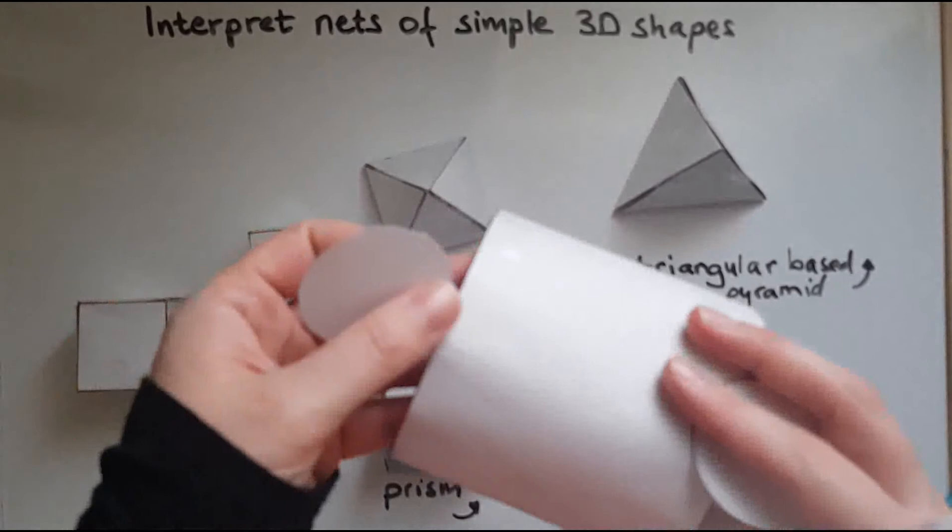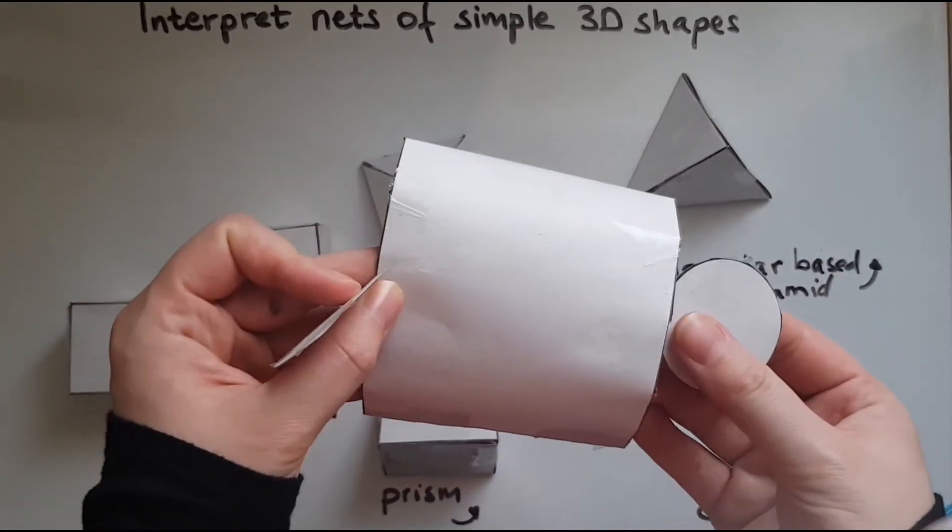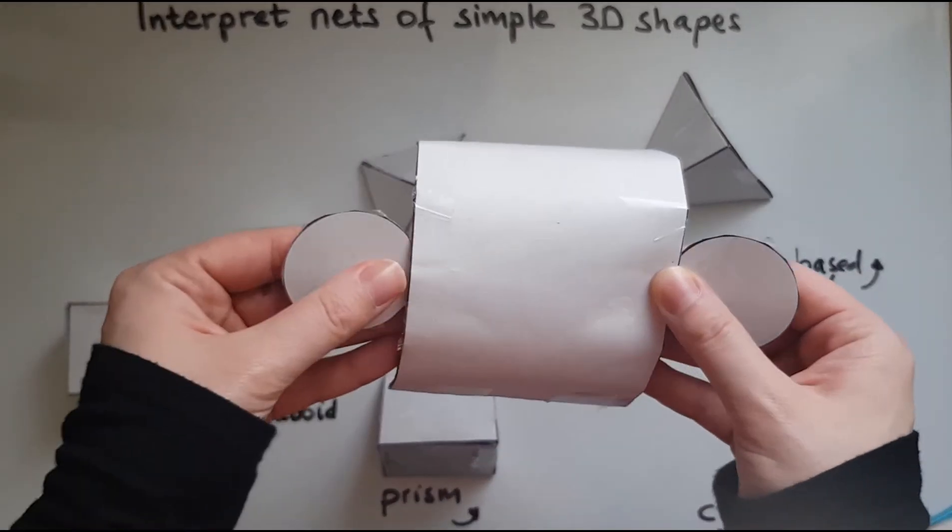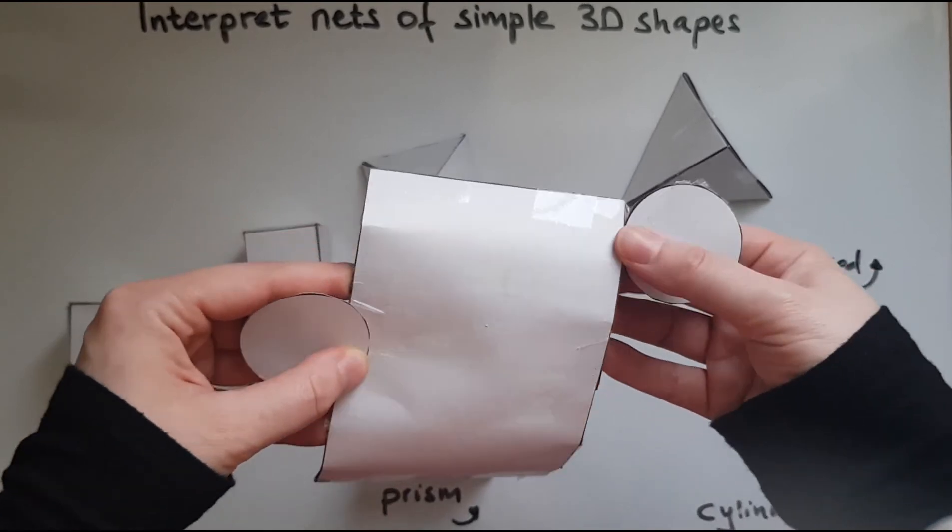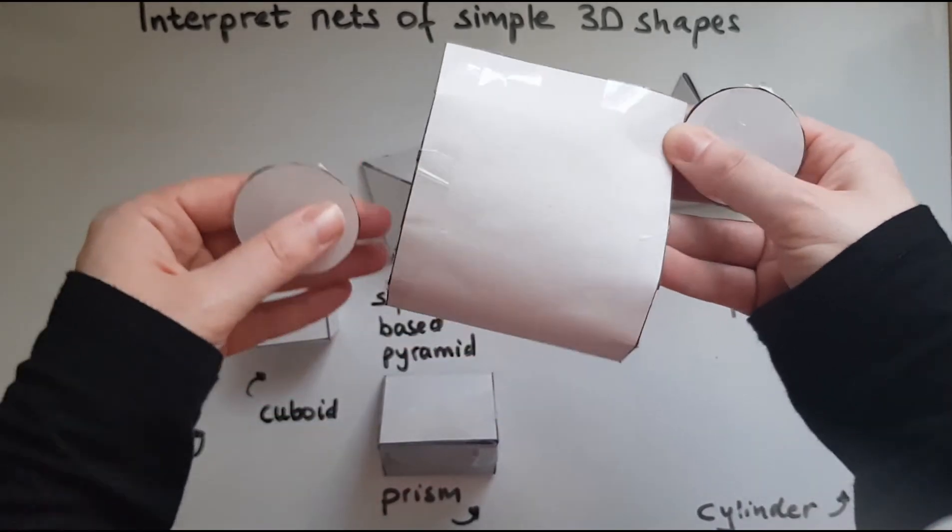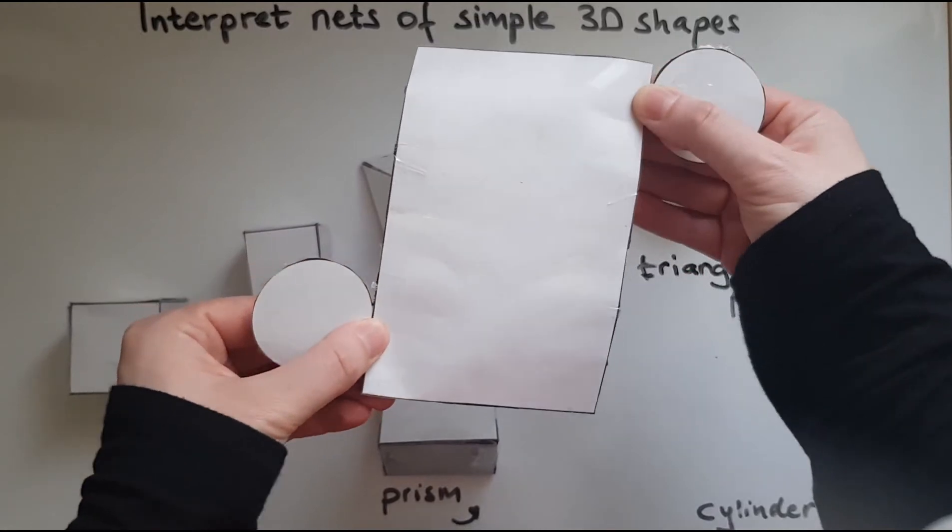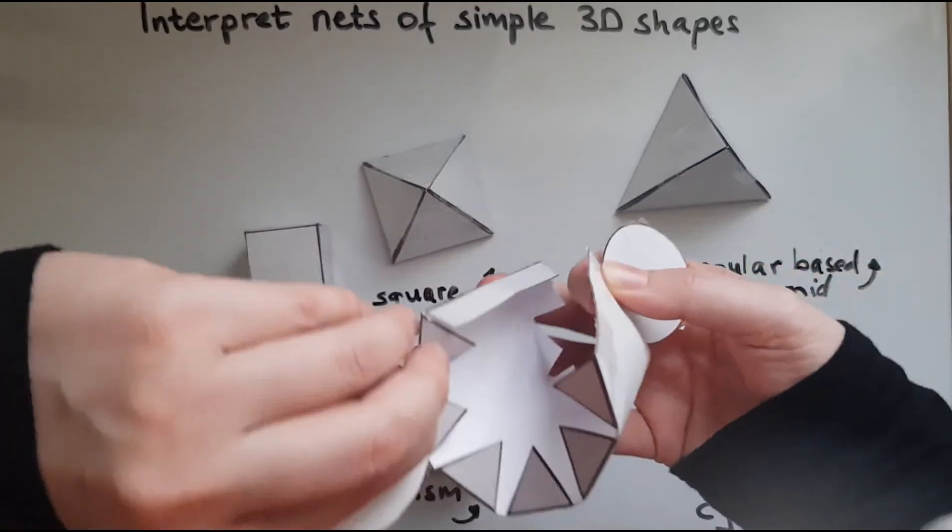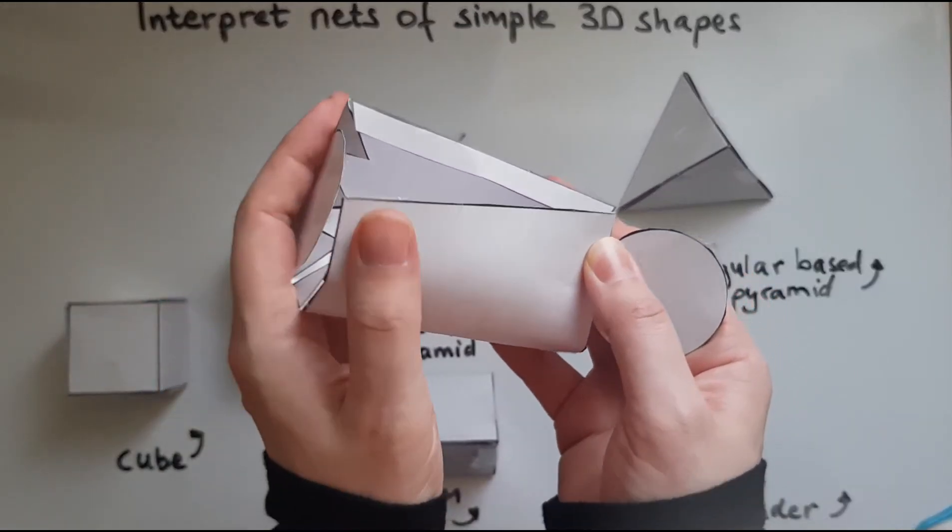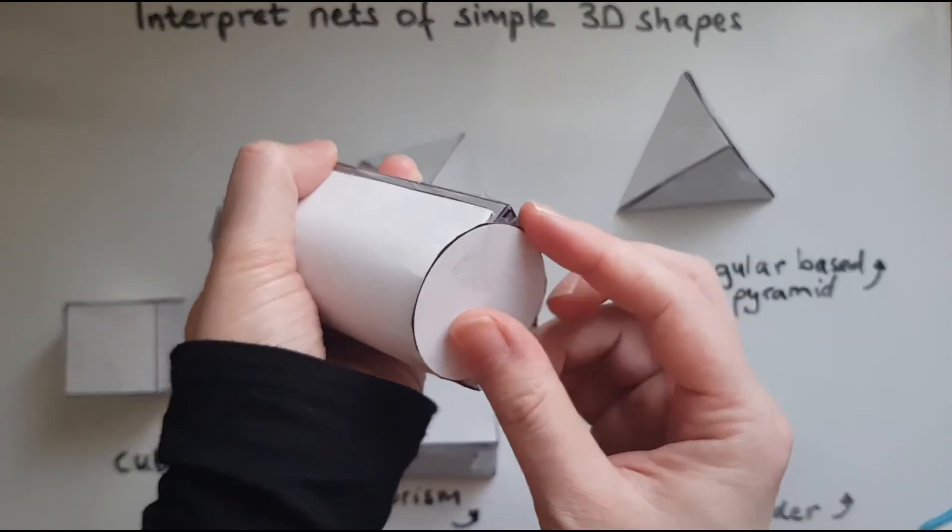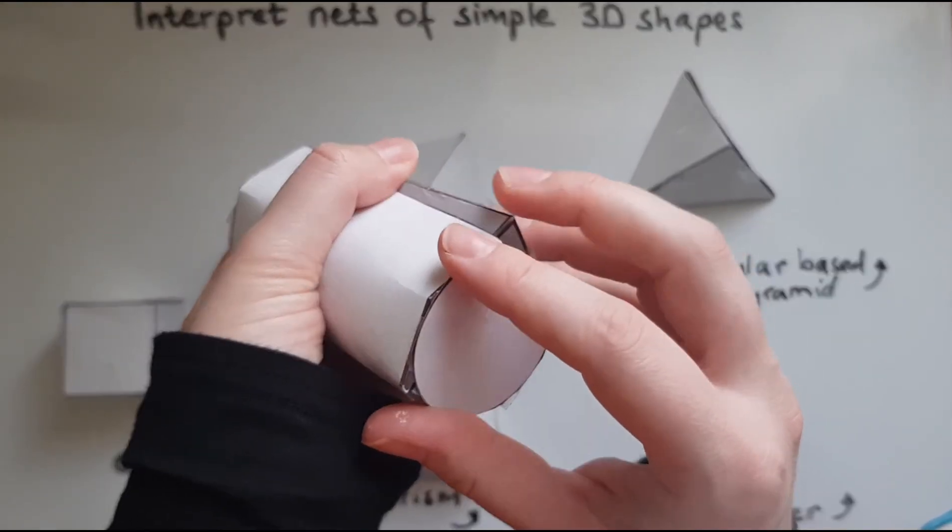So that makes the circular faces of the cylinder. Now, in terms of the position of these circles, they could be anywhere, either here in the middle, or they could be right at the edges. And it does not matter.